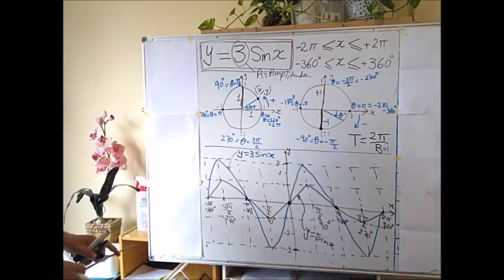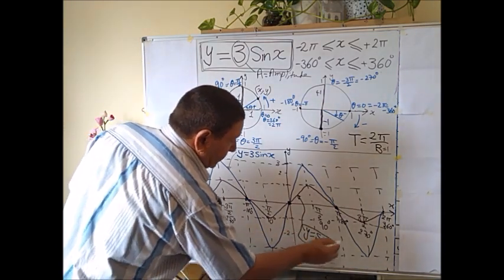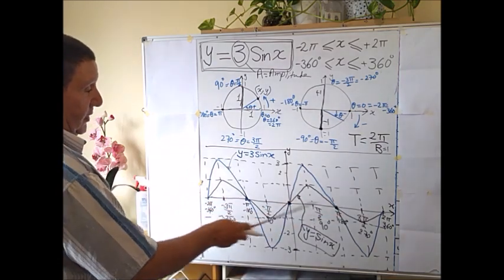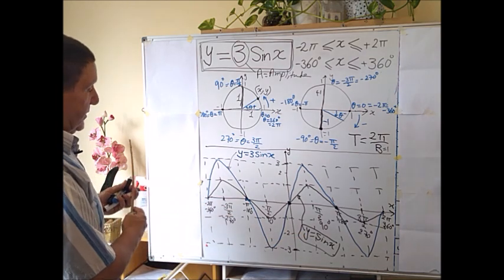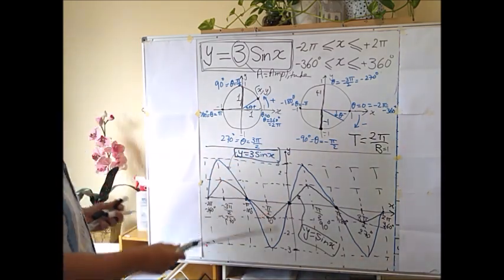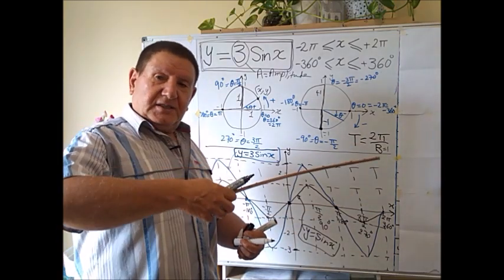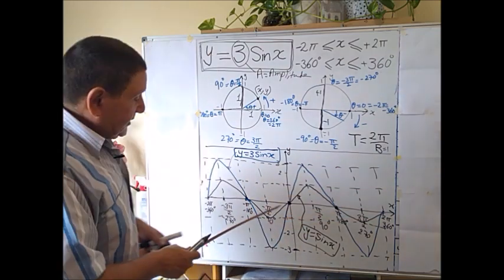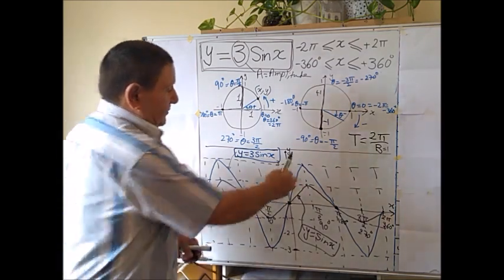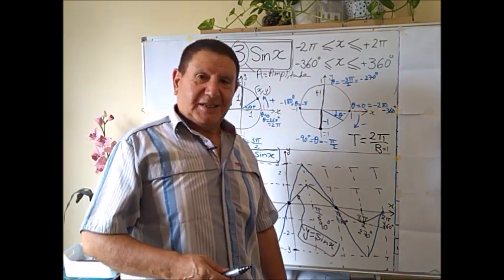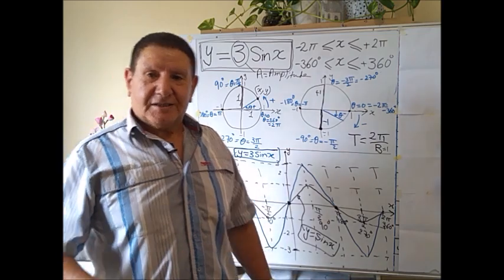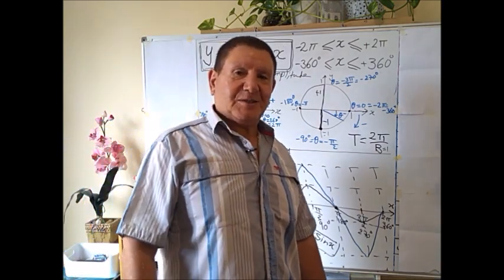So what do we notice? The basic function y = sin(x) has amplitude 1 and frequency 1 — one cycle between 0 and 2π. The new function y = 3 sin(x) represents a dilation or stretching along the y-axis by a factor of 3. It has the same shape as the basic function but stretched vertically by 3 — that's the effect of the amplitude. That's it folks, I hope you enjoyed it. Please subscribe and see you in the next video!